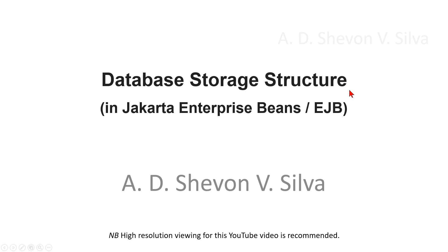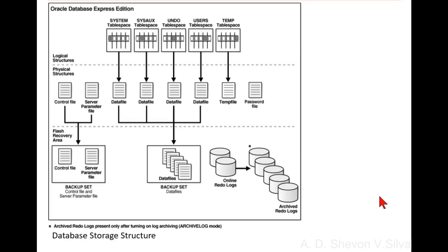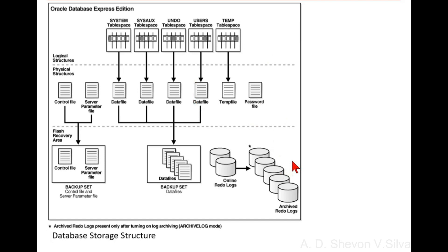Database storage architecture in Oracle Database XE. This diagram shows the logical, physical, and recovery-related structures of the database and the relationships between them. Dotted horizontal lines divide the image into three sections: the top section shows logical structure, the middle section shows physical structure, and the bottom section shows recovery-related structures in the flash recovery area.